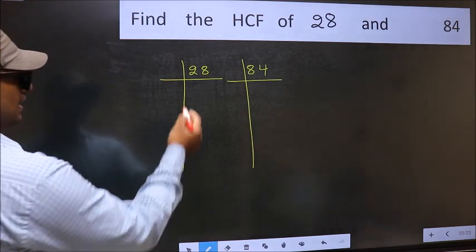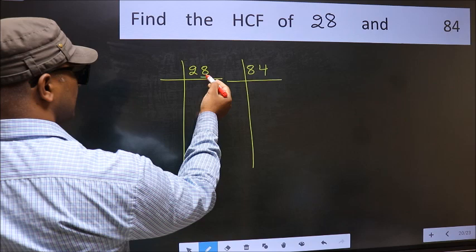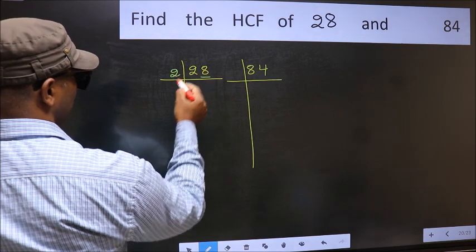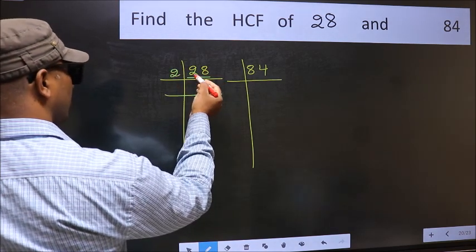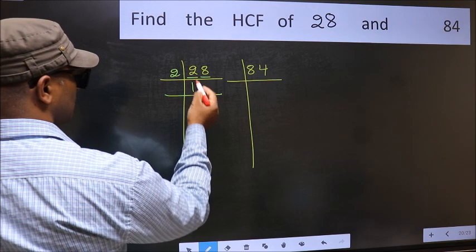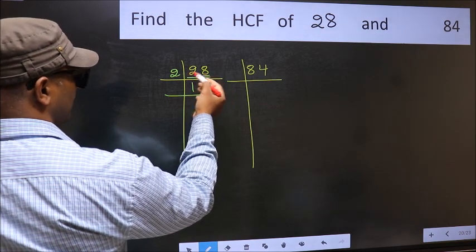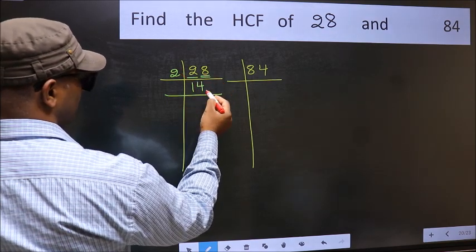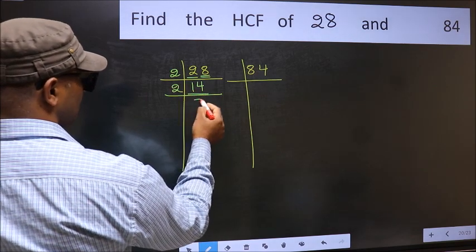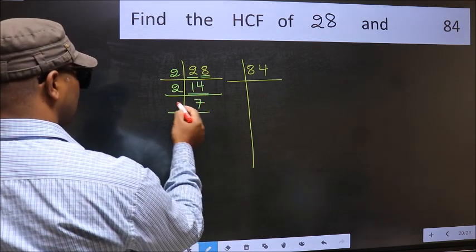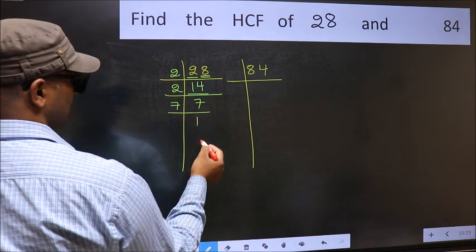Next, in this number, last digit 8 is even, so take 2. First number 2, when do we get 2 in 2 table? 2 times 1 is 2. The other number 8, when do we get 8 in 2 table? 2 times 4 is 8. Now 14 is 2 times 7 is 14. Now 7 is a prime number, so 7 times 1 is 7.